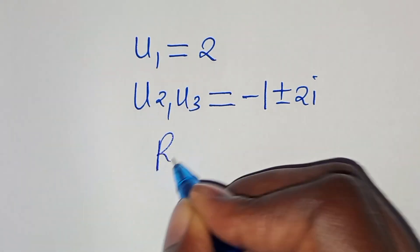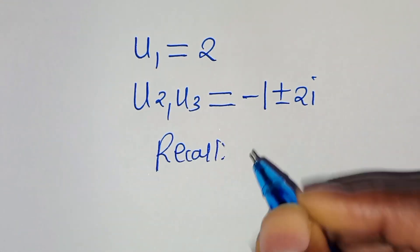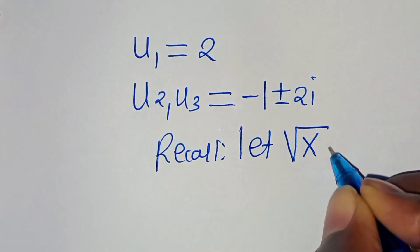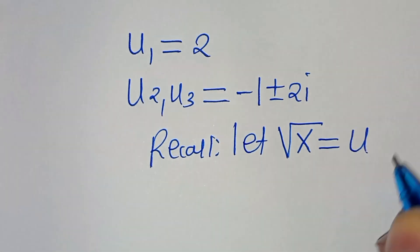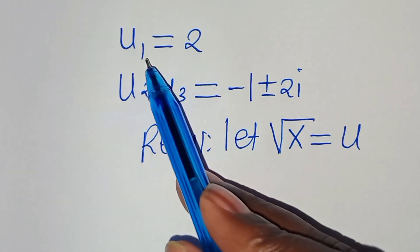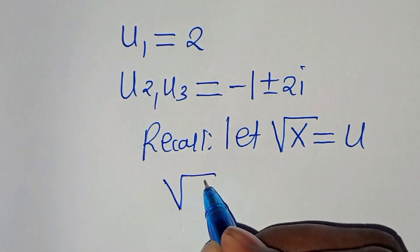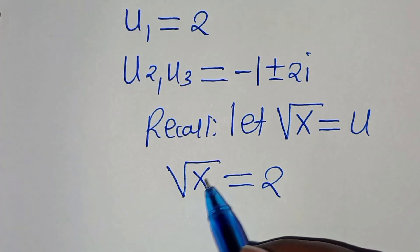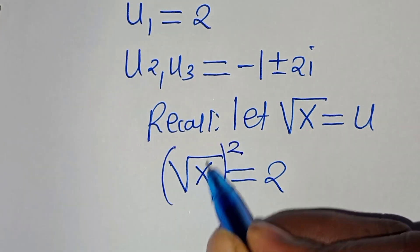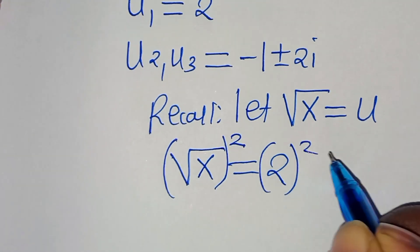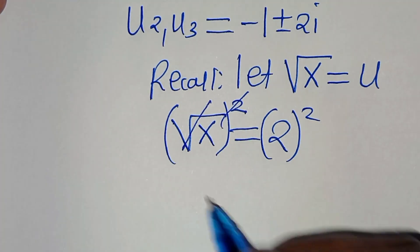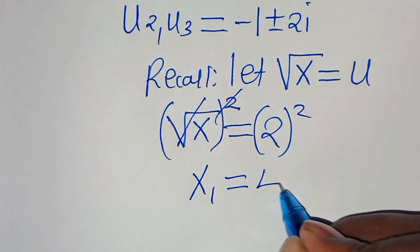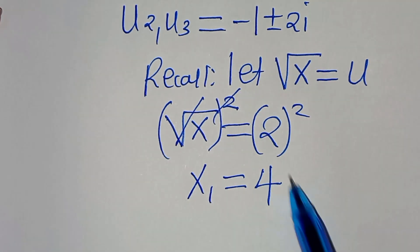Now, recalling that we let the square root of x be equal to u, starting with u₁ which is 2, we have square root of x equals 2. Squaring both sides to eliminate the square root gives us x₁ equal to 2 to the power of 2, which is equal to 4. So x₁ is equal to 4.